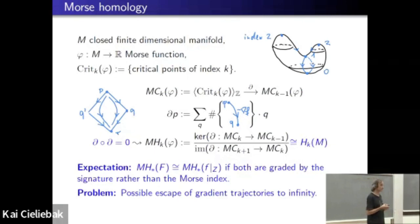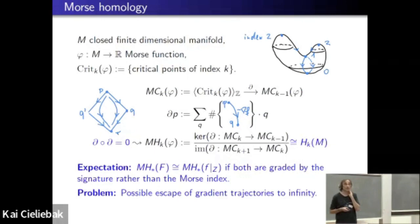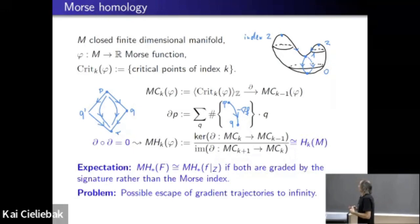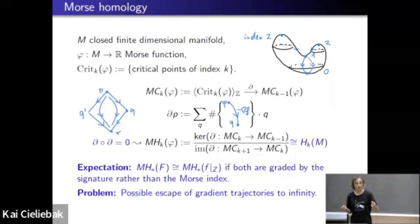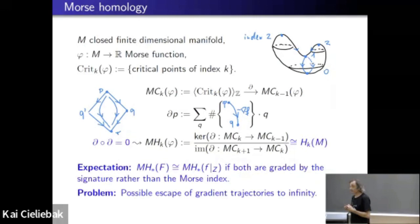Once you have a boundary operator, you can take its homology: the kernel modulo the image of δ. That is what we call the Morse homology in degree k. Going back to our situation with function f and the constraint, and the Lagrange multiplier functional capital F — we've already seen those two have the same critical points. Therefore the natural expectation would be that their Morse homologies would also be isomorphic.